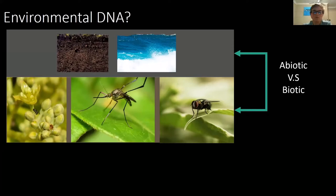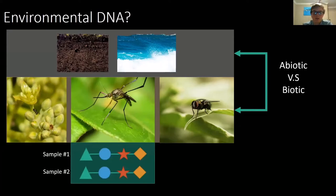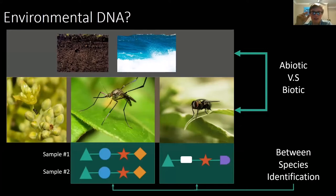Another example is pollinators. Because pollinators collect pollen on their bodies as they forage among flowers, that pollen can be washed off an insect, extracted, and amplified up so we can see the taxonomic diversity of plants visited by those insect species. The real power of eDNA is low intraspecific variation — two samples from the same species can't be differentiated — but high interspecific diversity, meaning you can distinguish between species.